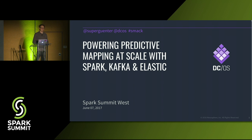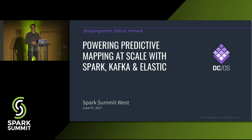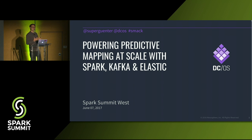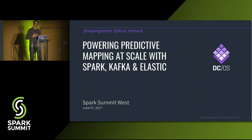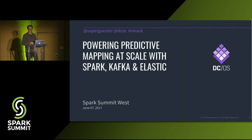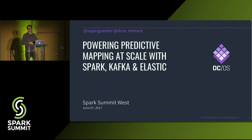Spark was one of the first applications that ran on top of Apache Mesos, which is the core for the product we're building at Mesosphere, called DCOS. What I want to talk about today is how you build a full IoT pipeline — an example being a mapping platform using Spark, Kafka, Elastic, and running it all on top of DCOS.